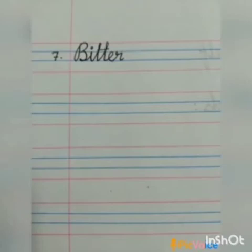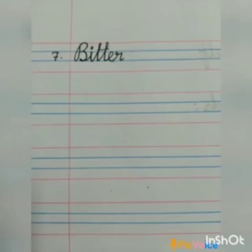Seventh dictation word is Bitter. Bitter means a very sour or sharp taste — like a bitter gourd, which is very bitter. That taste is called bitter. Spell: B-I-T-T-E-R. Bitter.